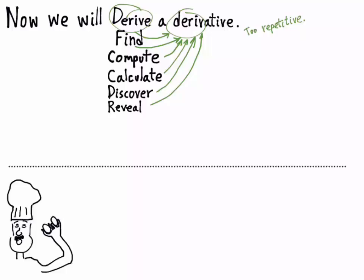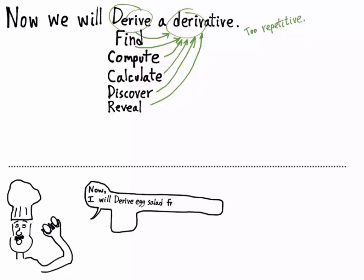An analogous situation would be a chef who says, 'I will now derive egg salad from these eggs.' 'Derive' is a transitive verb, and the object is 'egg salad.' Or instead, he could say, 'I will create egg salad,' or 'I will concoct egg salad,' or 'I will produce egg salad.'